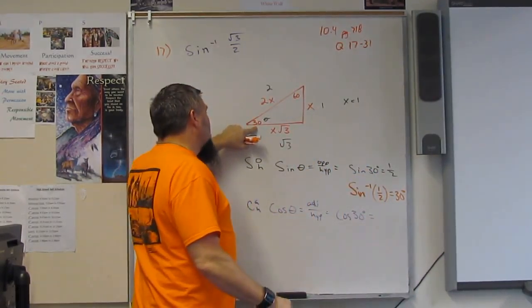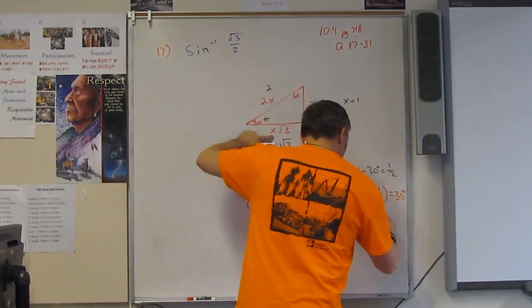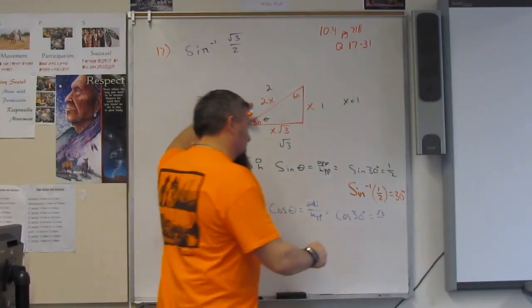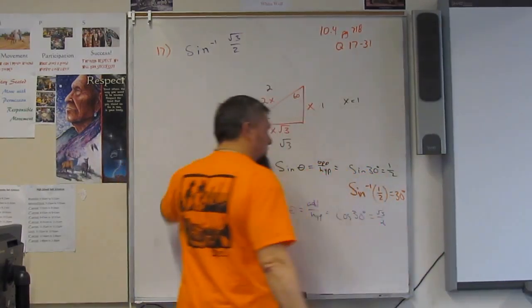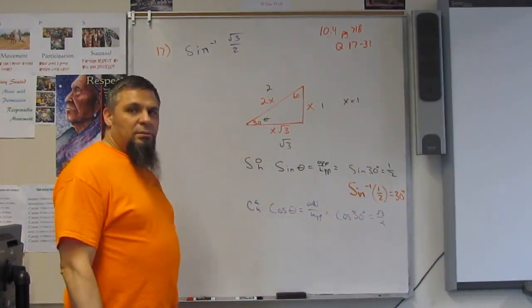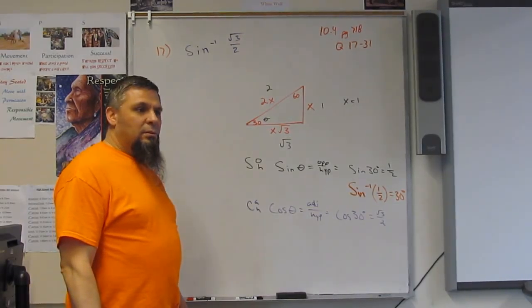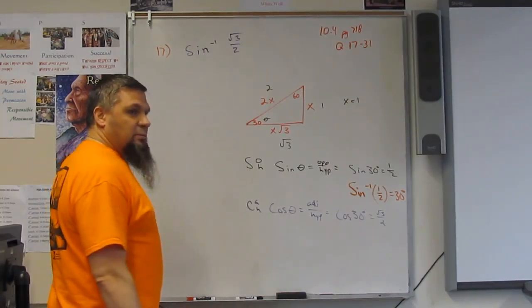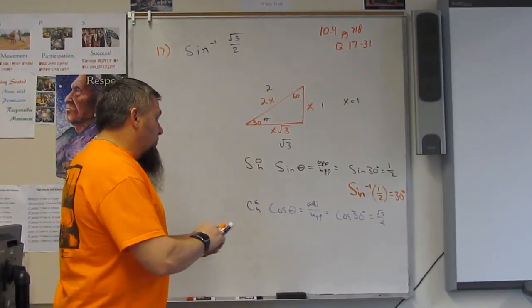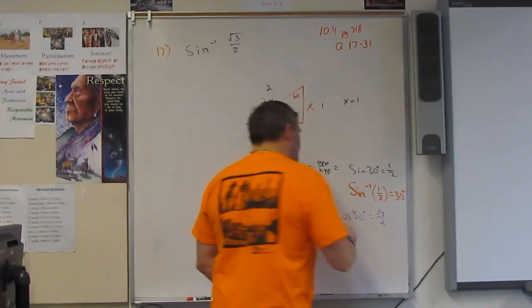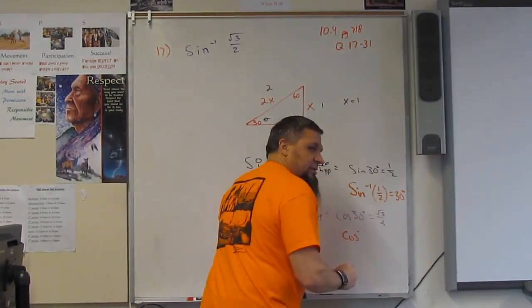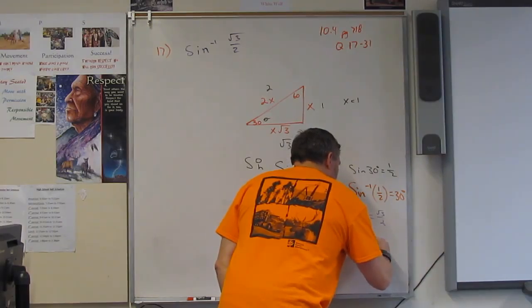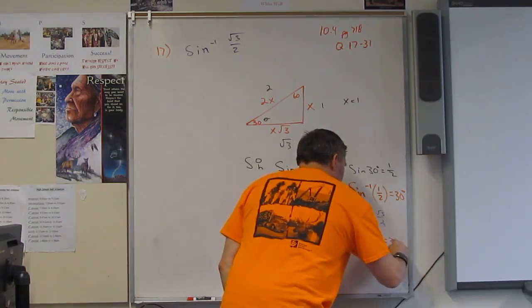So, that means that cosine inverse of the square root of 3 over 2 is equal to 30 degrees.